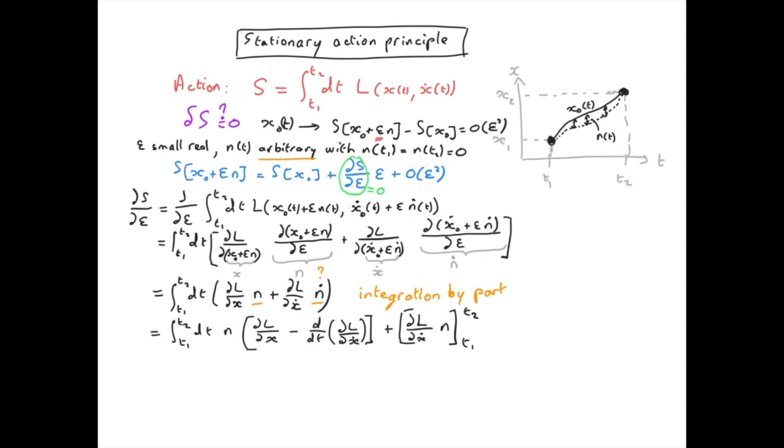In this last term we use the notation where we take the difference of what is between the bracket between T₂ and T₁. But we already saw that the function η is zero at T₁ and T₂. Therefore, this last term is simply zero.